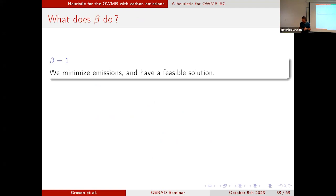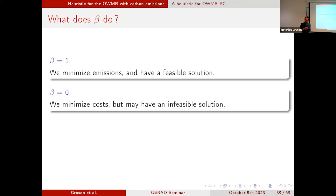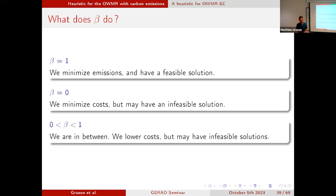If I put beta equals one, I will just focus on the emission part, minimize the emissions, and end up with a feasible solution — which is what I want. On the other side, if beta equals zero, I'm just focusing on costs and not at all on emissions, so I may obtain an infeasible solution. In between, I have no guarantee of a feasible solution, because I put some emphasis on cost and the rest on emissions.